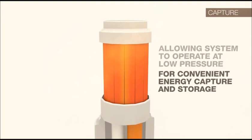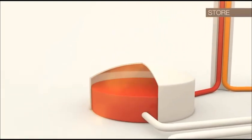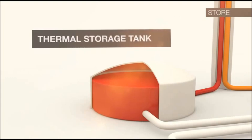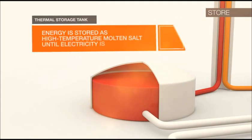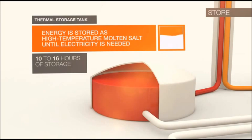After passing through the receiver, the molten salt flows down the piping inside the tower to a thermal storage tank, where the energy is stored as high-temperature molten salt until electricity is needed.